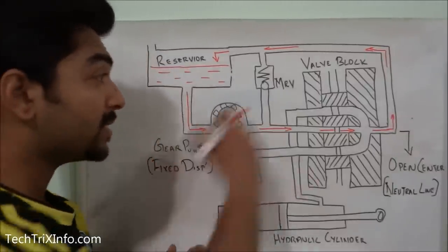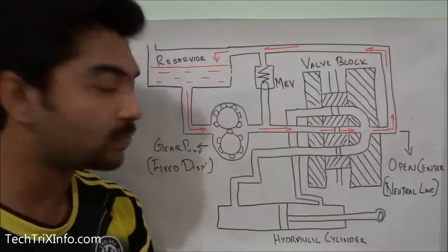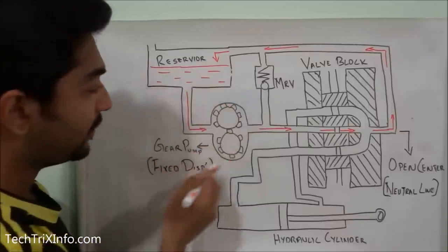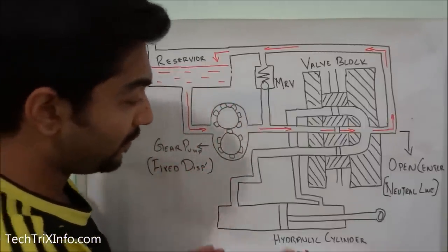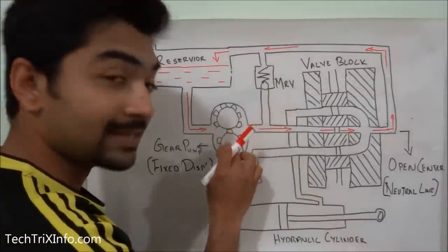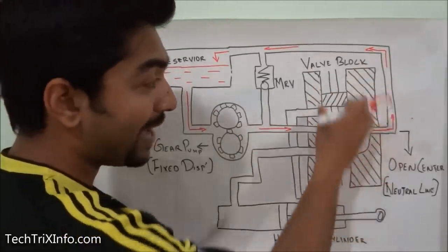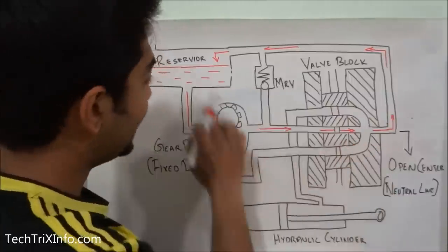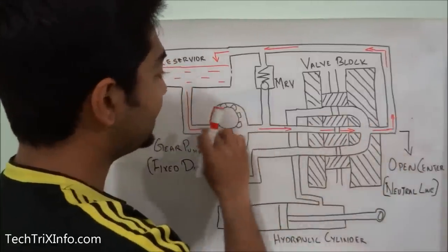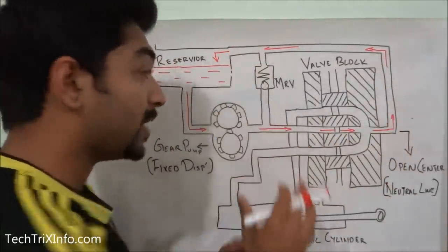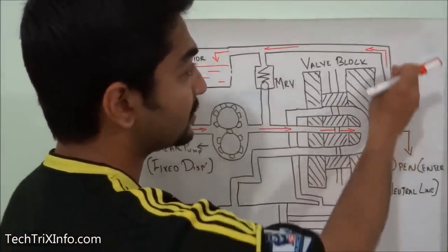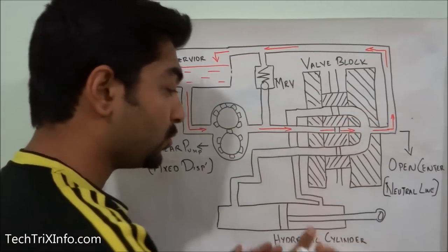Now with the help of this diagram and circuit, let's see how an open-center hydraulic system exactly works. First, let's identify the components. This is the reservoir where we store the fluid. Then we have a gear pump, which is a fixed displacement pump. Then we have the actuator or the hydraulic cylinder. This is the MRV, which is the main relief valve that protects the hydraulic pump. Then this is the valve block, which is the control valve. In the center we can see the spool, and this red line marked here is the open center of the control valve — the neutral line — which directly connects towards the reservoir.